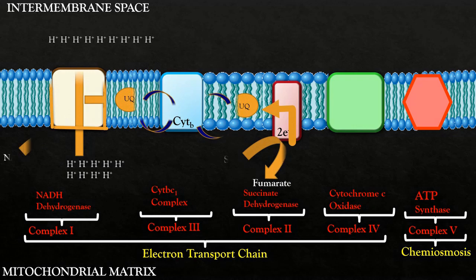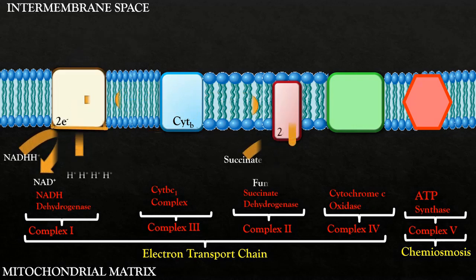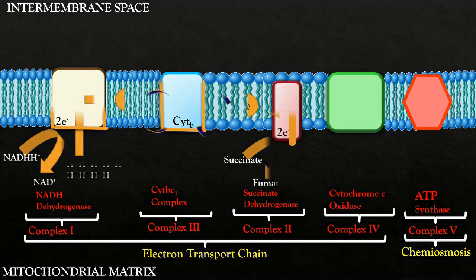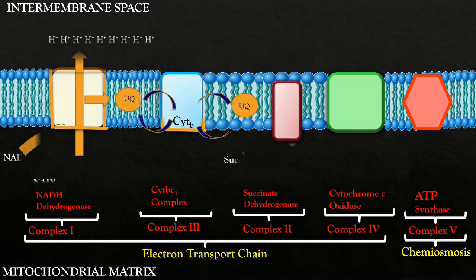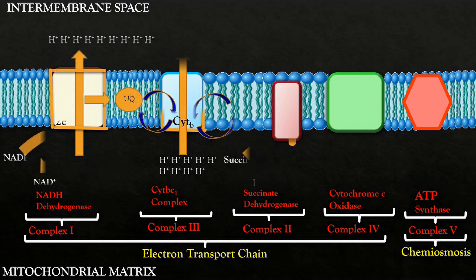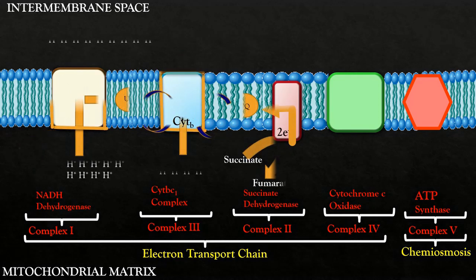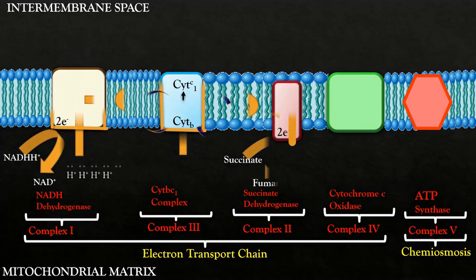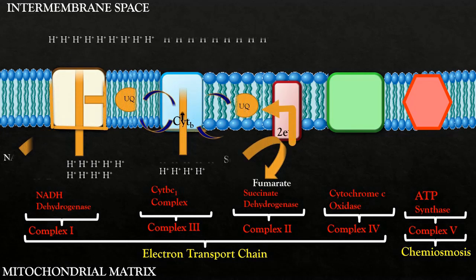Coenzyme Q then transfers these electrons to cytochrome B in complex 3 which is also named as cytochrome BC1 complex. Oxidation reduction cycle of coenzyme Q continues as it passes electrons from complex 1 and complex 2 to cytochrome B in complex 3. After receiving electrons, complex 3 also becomes supercharged. Now it has a high potential energy to pump more protons from mitochondrial matrix to intermembrane space. This results in the further accumulation of protons and building up a difference of proton gradient on both sides of the membrane. Within complex 3, cytochrome B passes its electron to cytochrome C1 through FES.